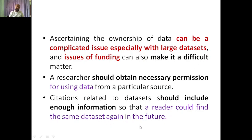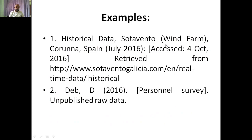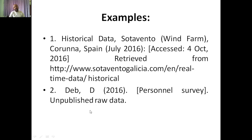Citation related to the dataset should include enough information so that the reader could find the same dataset again in the future. For example, historical data from Sodavento in Coruña, Spain, published in July 2016 — the author accessed that particular data on 4th October, roughly two months later. You can also put a link so that people who want to get more data can click and access it.